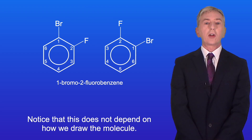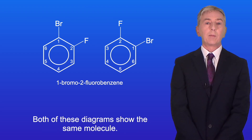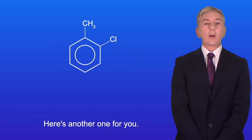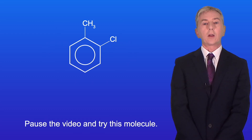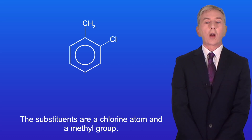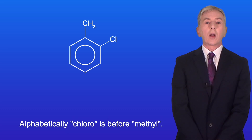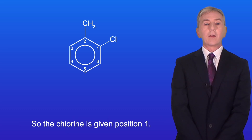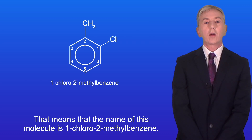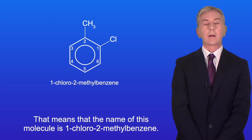Here's another example. The substituents are a chlorine atom and a methyl group. Alphabetically, chloro comes before methyl, so the chlorine is given position 1. That means the name of this molecule is 1-chloro-2-methylbenzene.